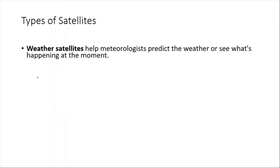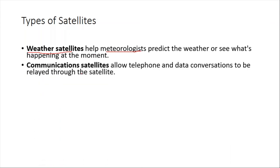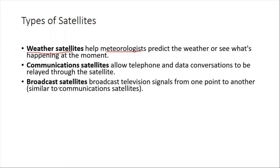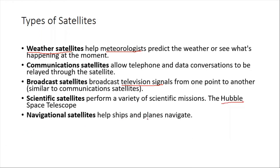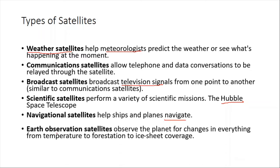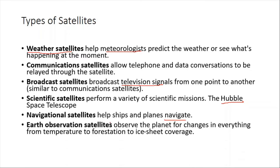There are several types of satellites: weather satellites used by meteorologists; communication satellites used for phone calls; broadcast satellites for receiving television signals; scientific satellites such as the Hubble Space Telescope; navigational satellites that help ships and planes navigate; earth observation satellites that monitor temperature and pressure; and military satellites.